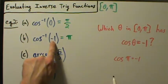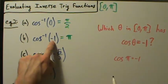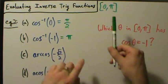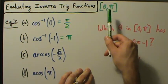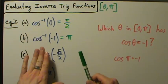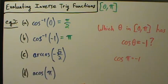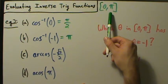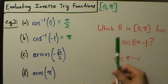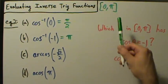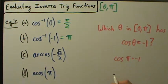Since the input is negative 1, you might be tempted to give a negative answer, but be careful: the range is from 0 to pi, so you will never have a negative answer. When you evaluate the inverse cosine function, your answer will never be negative — it will be 0 or something positive all the way up to pi. Your answer must be somewhere in the interval 0 to pi.